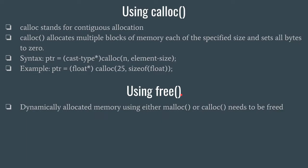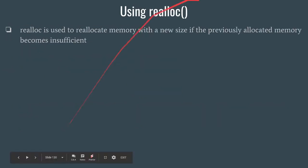Once we have allocated dynamic memory, we are using space on the heap. Once the work with this dynamically allocated space is over, we need to free that space so that it can be reused in the future. If you do not free it, the heap will keep getting occupied and eventually become full. That is why it is always good practice to use the free() function — for example, free(ptr) — once your work with that memory block is done.